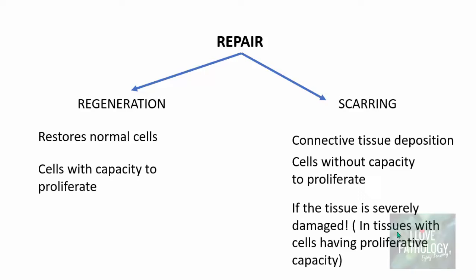In the second scenario, even in tissue where cells have the capacity to proliferate, if that tissue is very severely damaged, part of the tissue will be replaced by normal cells but the remaining part will be replaced by connective tissue — that is scar formation. So scarring can occur in two scenarios: one, in tissues where cells don't have the capacity to proliferate, and two, in any tissue that is severely damaged.